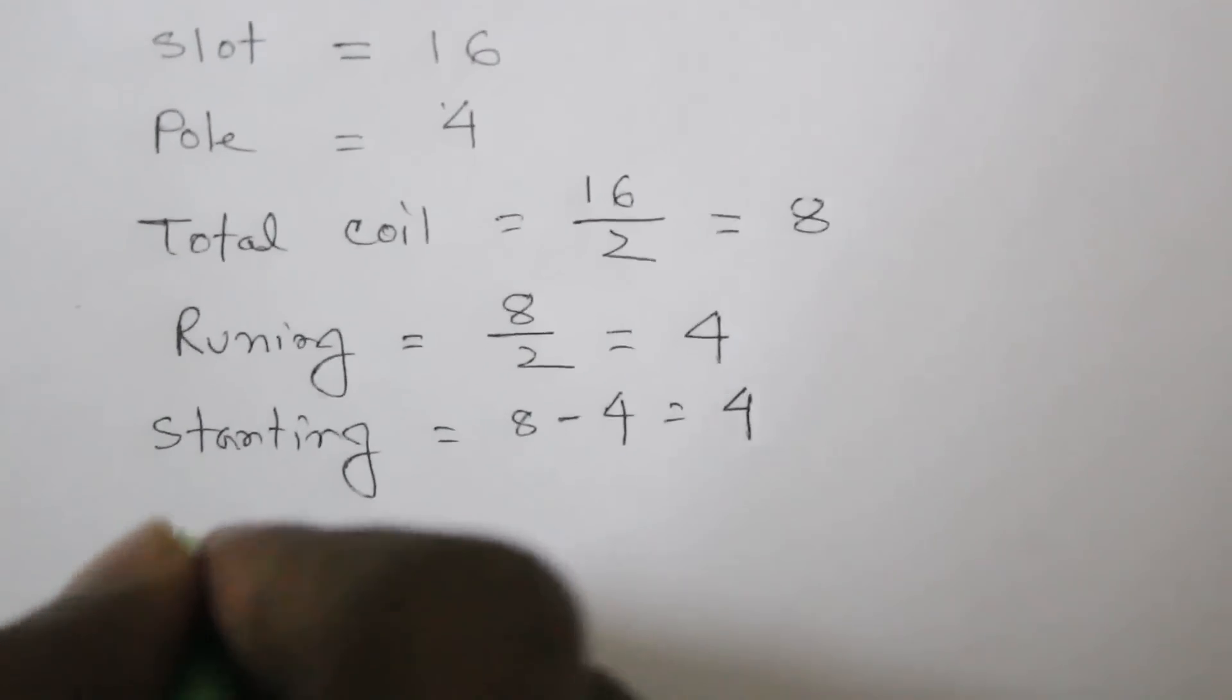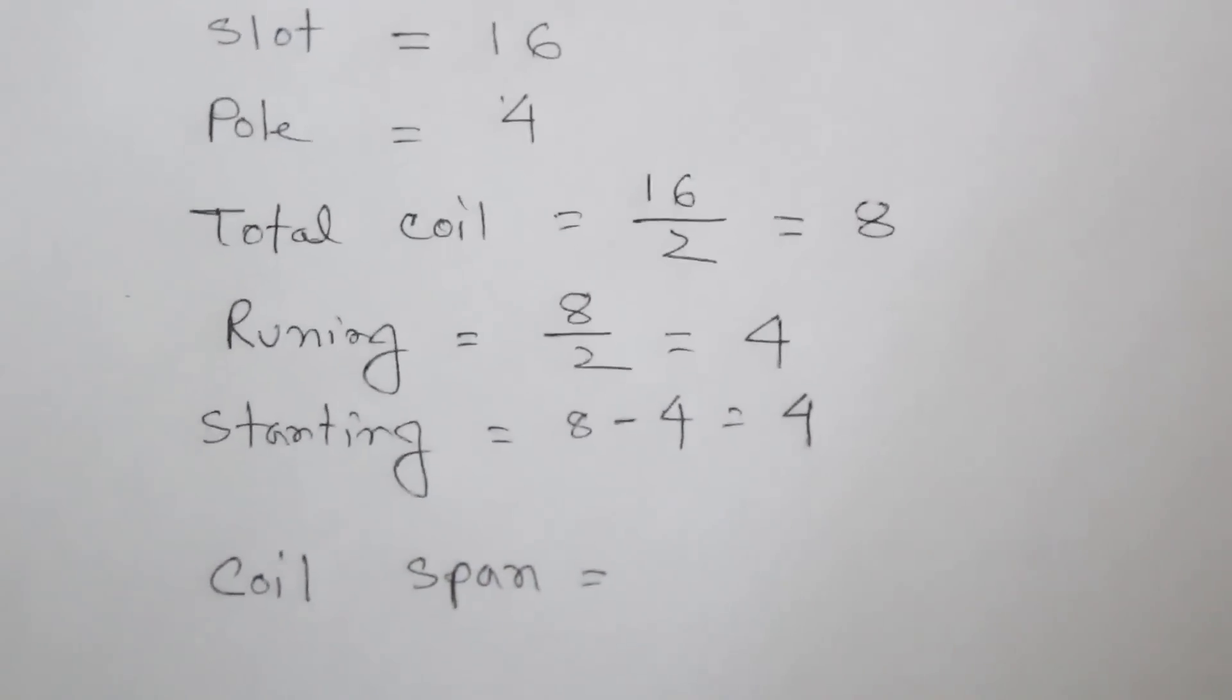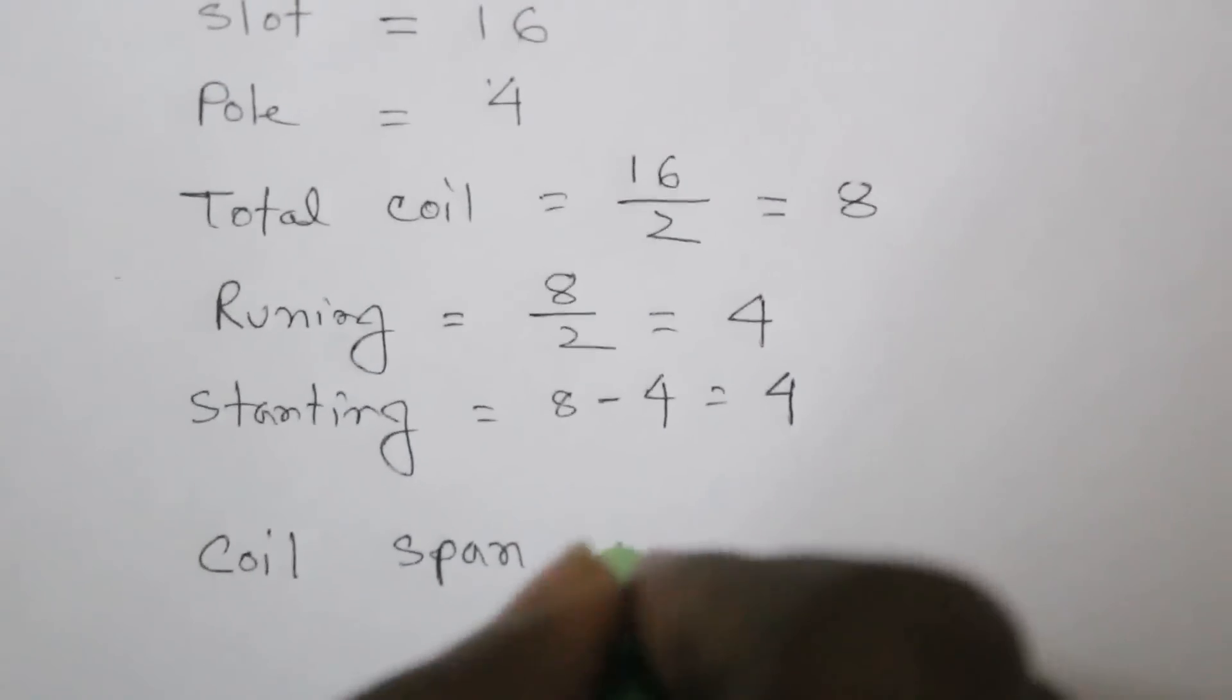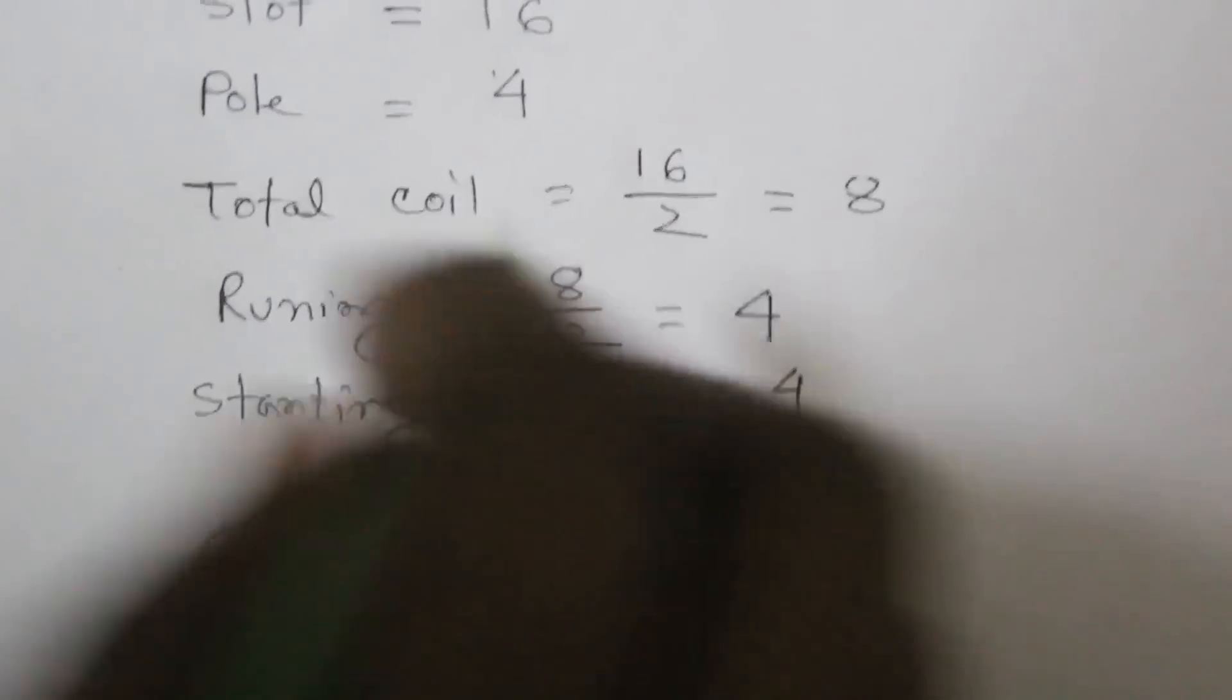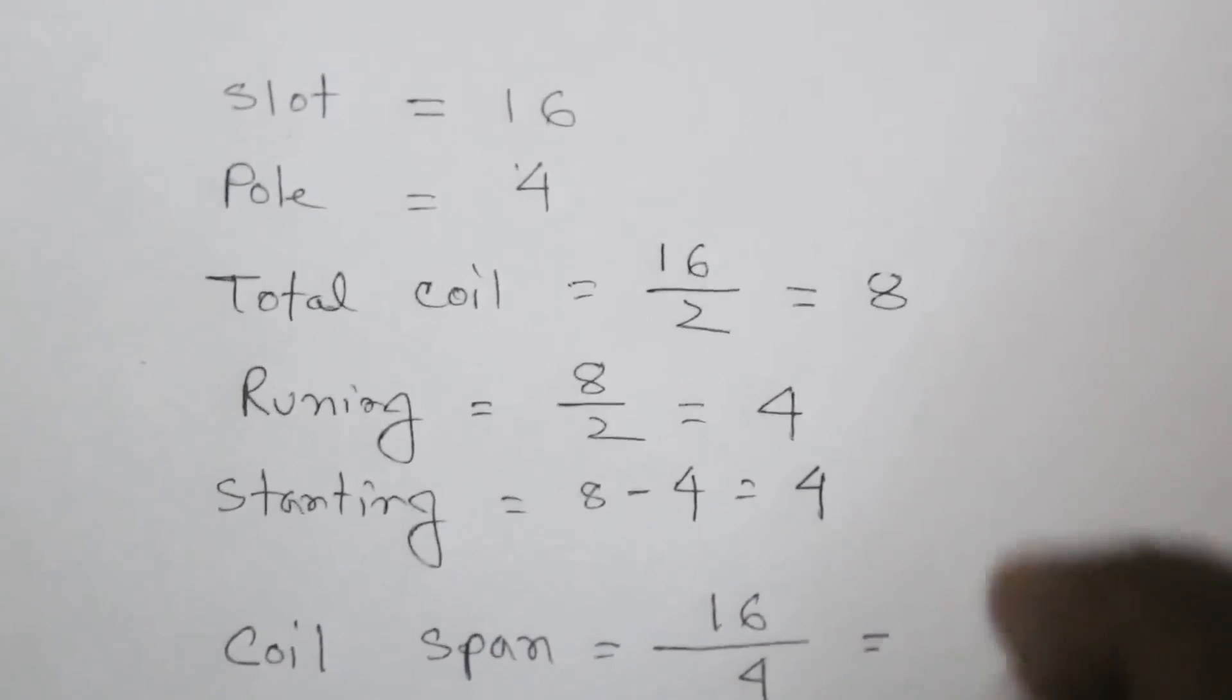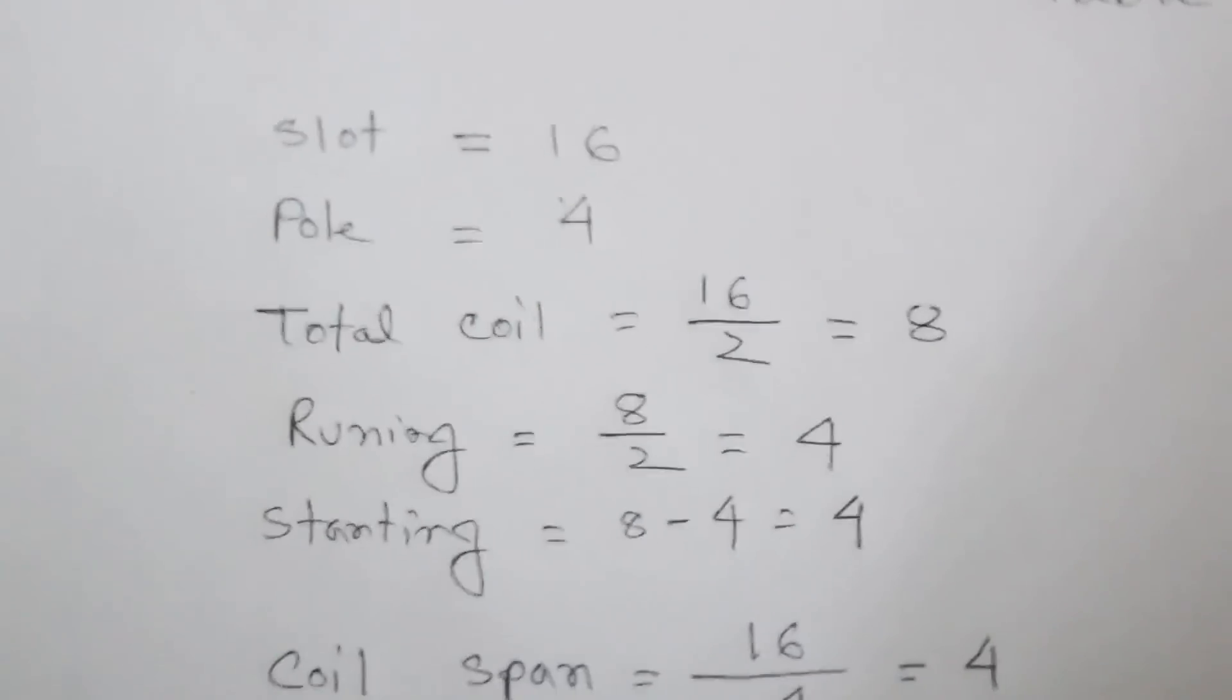Here is coil span. Coil span is most important - two coil, two side difference. So here coil span is this number, number of solat divided by 4. Here is 4, this means 1 to 4.